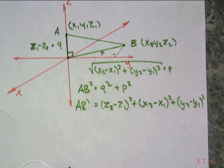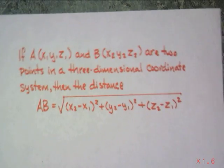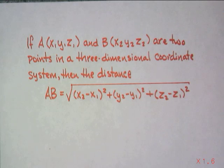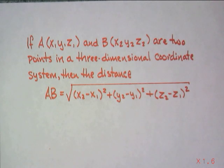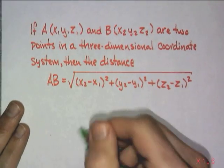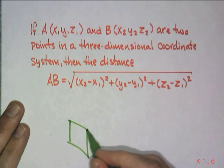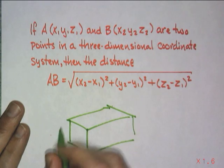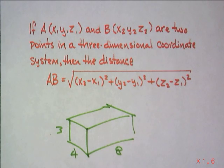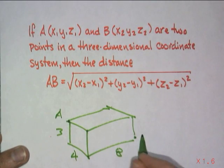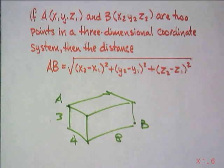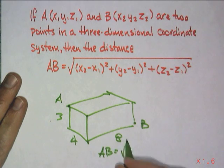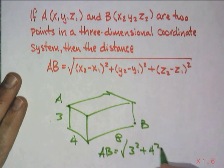So if I want to find the distance between any two points, all I need is the coordinates of the points. In general, if A is at (x1, y1, z1) and B is at (x2, y2, z2), two points in a three-dimensional coordinate system, then the distance between those is the square root of the difference of the x's squared, plus the difference of the y's squared, plus the difference of the z's squared. If it's a rectangular prism with given dimensions, the longest diagonal AB equals the square root of 3 squared plus 4 squared plus 8 squared.